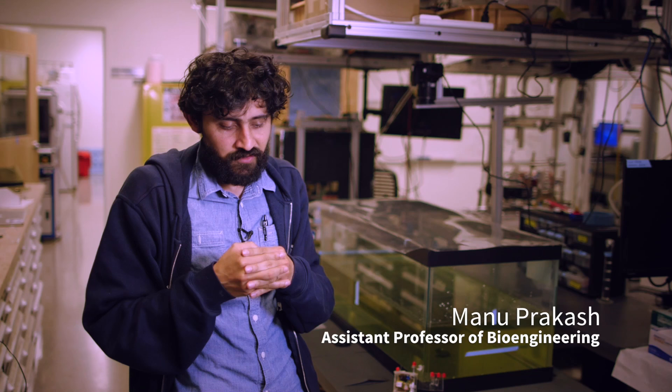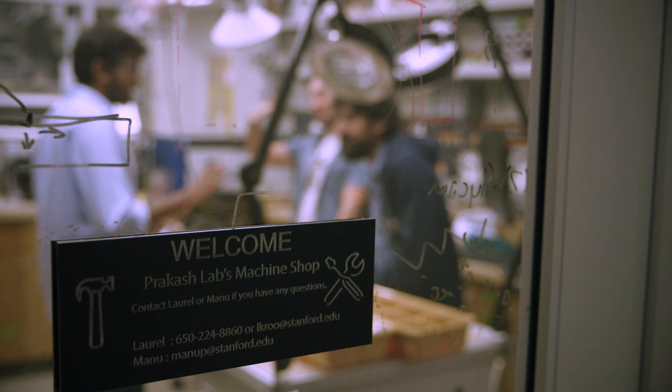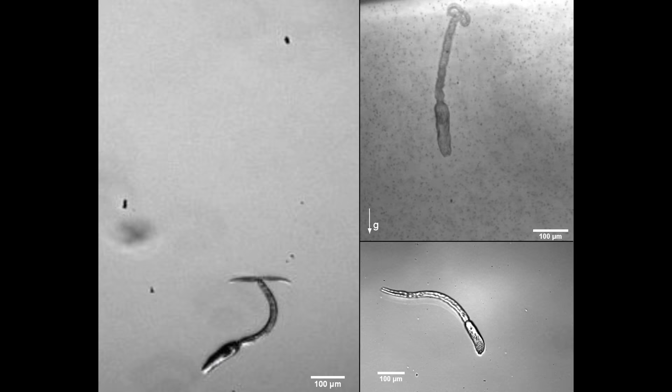One of the exciting things about biological problems is you can start with a question and it can take you in many different directions. Schistosomiasis is an extremely important disease to tackle. It falls into the category of neglected tropical diseases — it's a terrible disease. Hundreds of millions of people get infected, but at the root of this disease is a parasite that swims around in water bodies and infects people. One of the key aspects of that infection cycle is its swimming ability.